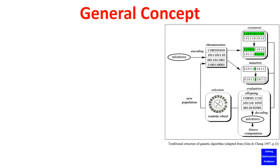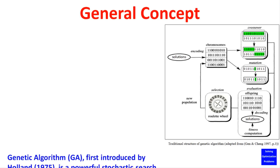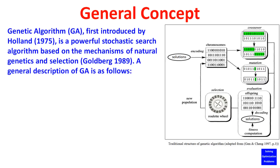Here is the general concept of genetic algorithm. Genetic algorithm was first introduced by Holland in 1975, and it is a powerful stochastic search algorithm based on the mechanisms of natural genetics and selection.